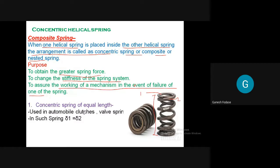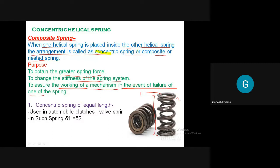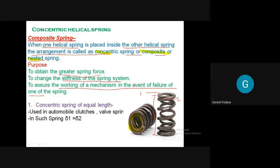Concentric helical springs are sometimes also called composite springs. The next topic we are going to discuss is the composite spring, or concentric helical spring. As you can see in the picture, there are two springs inserted one inside the other. This kind of arrangement is called a composite or concentric helical spring. When one helical spring is placed inside another helical spring, the arrangement is called a concentric spring, composite spring, or sometimes a nested spring.